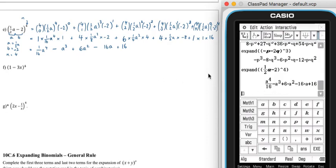So, A to the 4 and 16, yep, negative A cubed, plus 6A squared, negative 16A plus 16. So we can see here that this expansion's worked. That's good. Thank you.